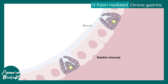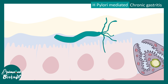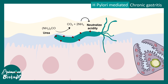Zooming in, we can see the gastric mucosa and the mucus layer, with a thin layer of gastric HCL on top. Generally all bacteria die because of this gastric HCL. However, H. pylori has a specific mechanism to change the pH of the stomach and increase it — it produces urease, which converts urea into ammonia and thereby inhibits and neutralizes the gastric acidity.